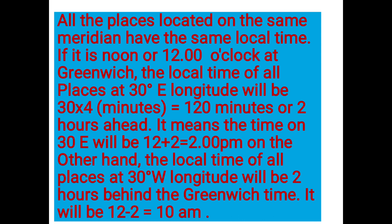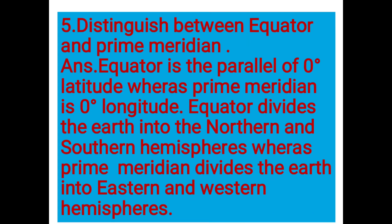Question 6: Distinguish between the equator and the prime meridian. The equator is the parallel of 0 degrees latitude, whereas the prime meridian is 0 degrees longitude. The equator divides the earth into the northern and southern hemispheres, whereas the prime meridian divides the earth into the eastern and western hemispheres.